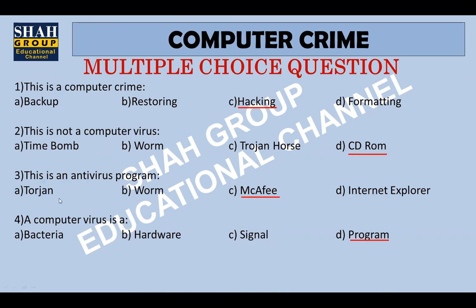Number three: this is an antivirus program. The options are: trojan, worm, McAfee, or Internet Explorer. The correct option is C, McAfee. Number four: a computer virus is a bacteria, hardware, signal, or a program? The correct answer is that a computer virus is a program.